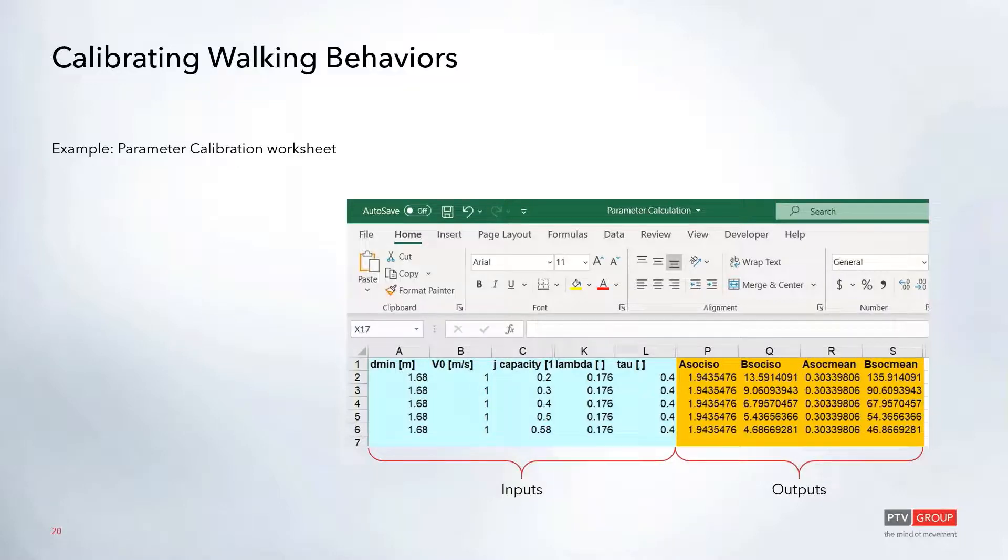In general, if you want to increase the distance between people or decrease the density, then you need to increase these parameters for the A social and B social parameters to increase those forces between people.